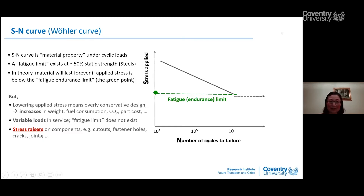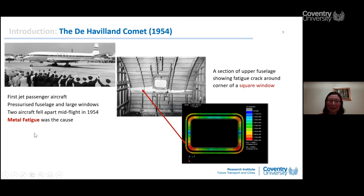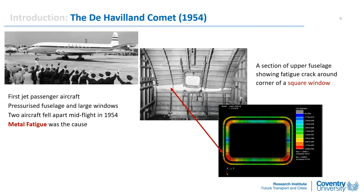The final key point is stress raisers on components — large cutouts, fastener holes, cracks, and joints with geometric discontinuity. The first major example is the de Havilland Comet aircraft in 1952, the first jet passenger aircraft with a pressurized fuselage and large square windows. That square window design was a mistake.